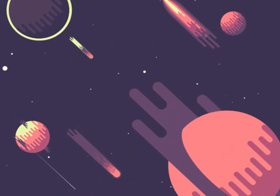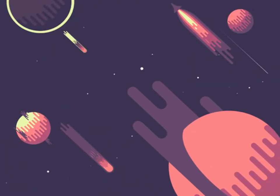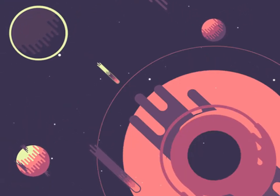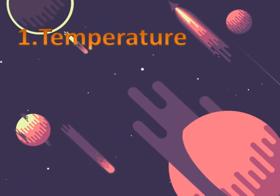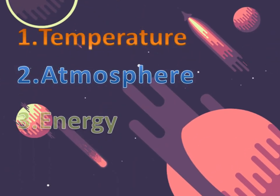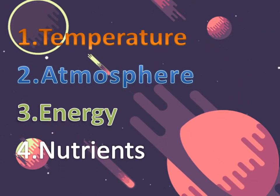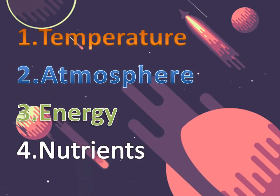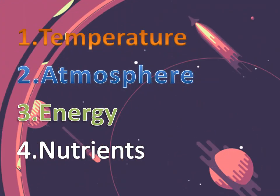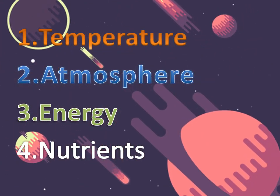Now that you have been able to differentiate the factors that make a planet habitable, can you narrate those factors again? Number one: temperature. Number two: atmosphere. Number three: energy. Number four: nutrients. That's great. We are now familiar with the different factors. Let us go further and explore more about the whole planet.